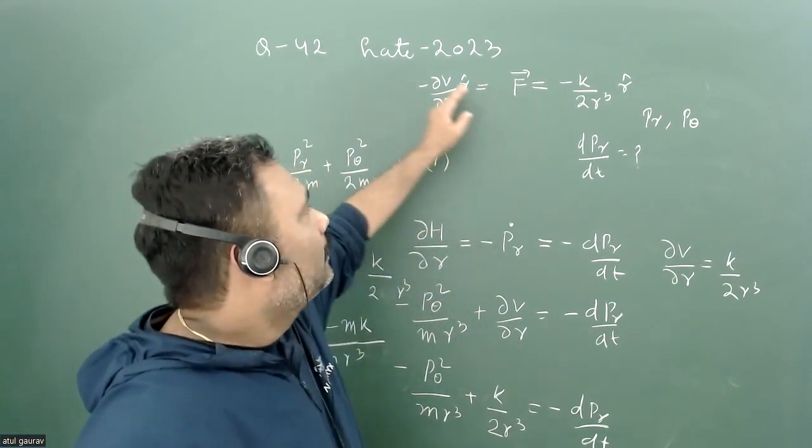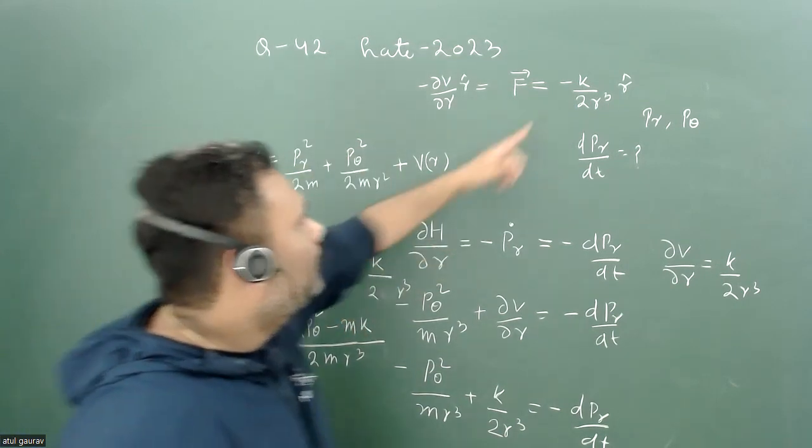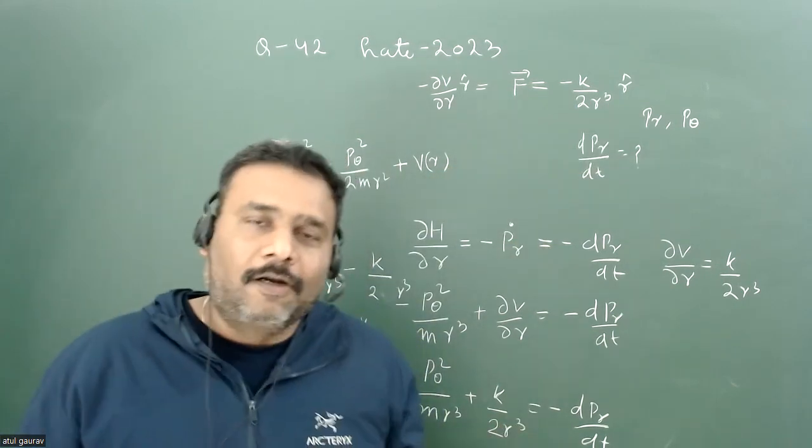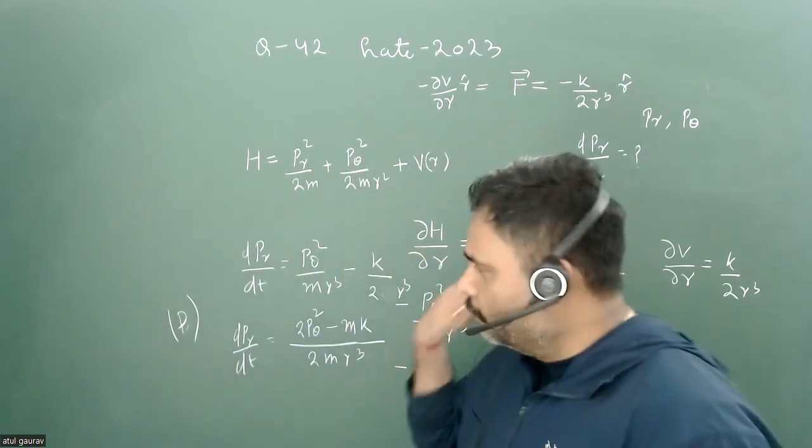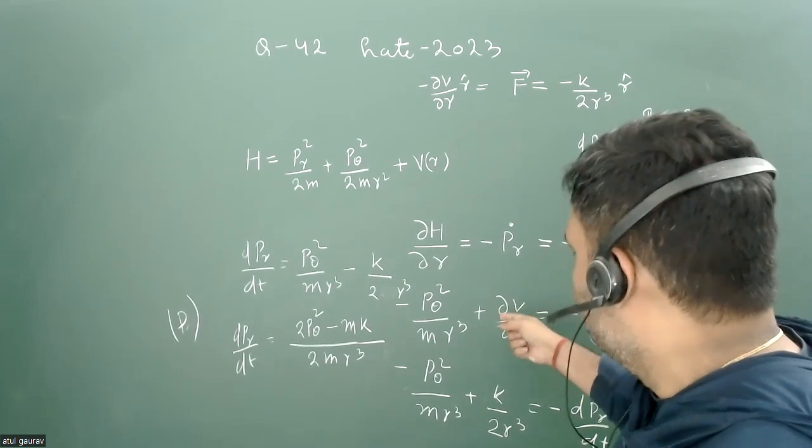A lot of people have done some unnecessary thing - first they calculate the potential, again put the potential here, and again differentiate it. You'll get exactly the same thing, so there's no need to do the potential if you know all the algorithm and you can easily save time.